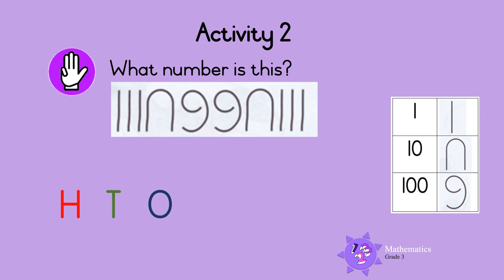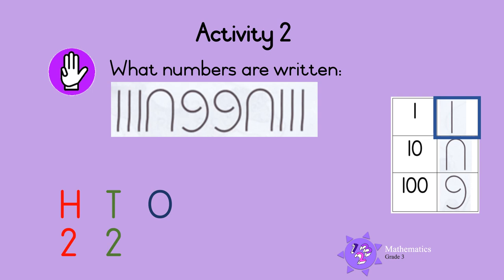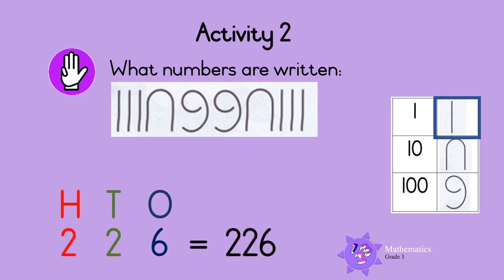What about this number? Do you know that the order of the symbols does not matter? Let's figure out what this number is. This is the symbol for 100 — there are one, two of these symbols, meaning there are two hundreds. This is the symbol for 10 — there are one, two of these symbols, meaning there are two tens. And this is the symbol for one — there are one, two, three, four, five, six of these symbols, so there are six ones. So the number is 226.